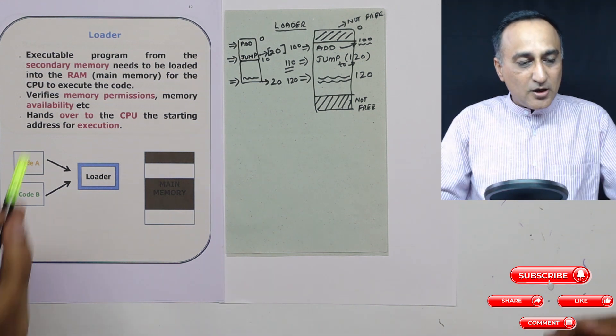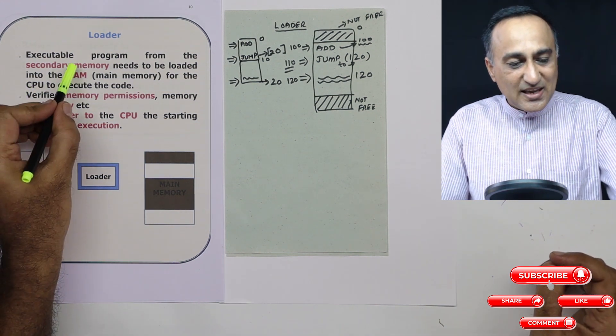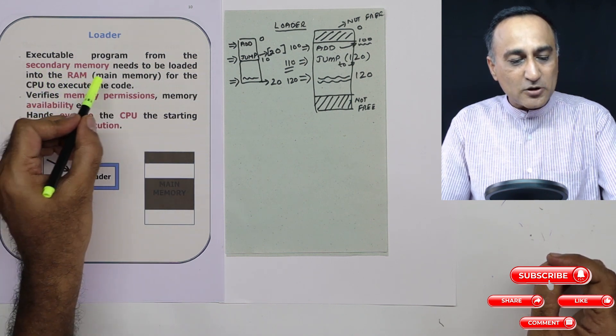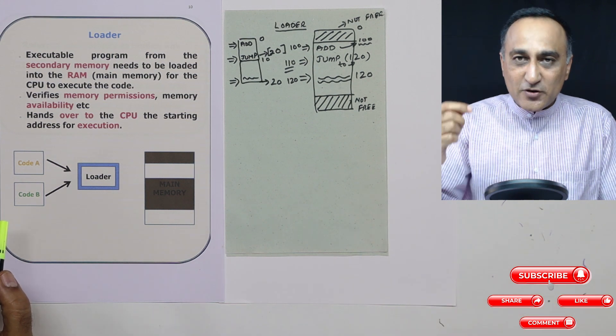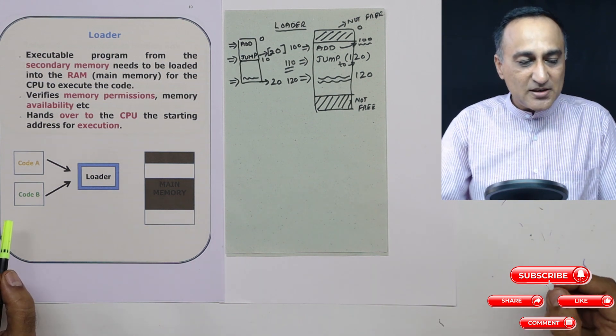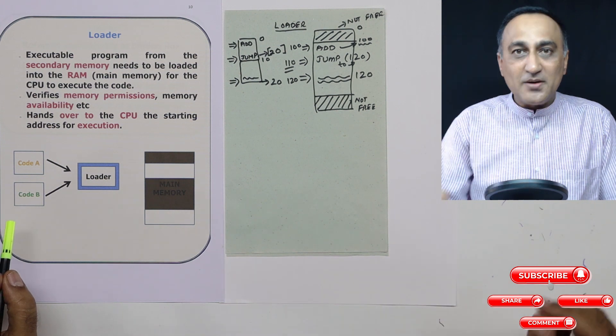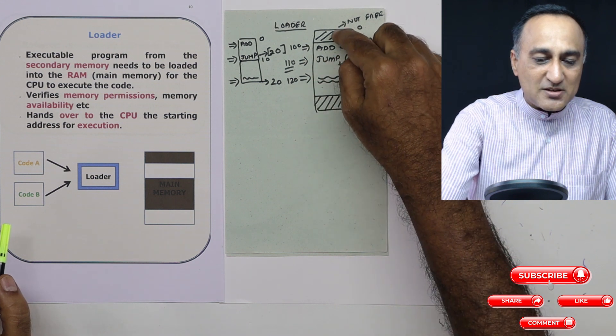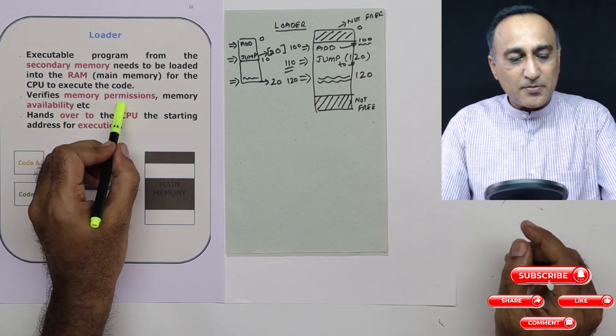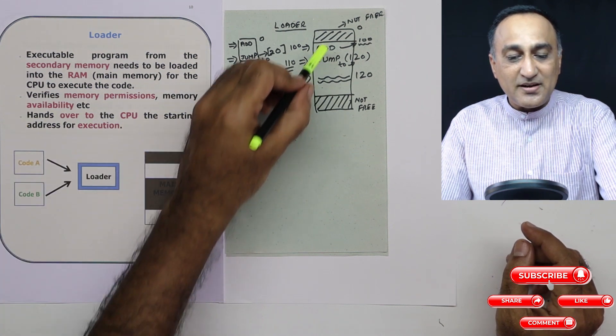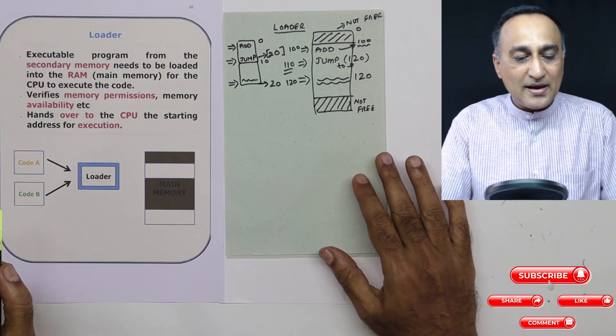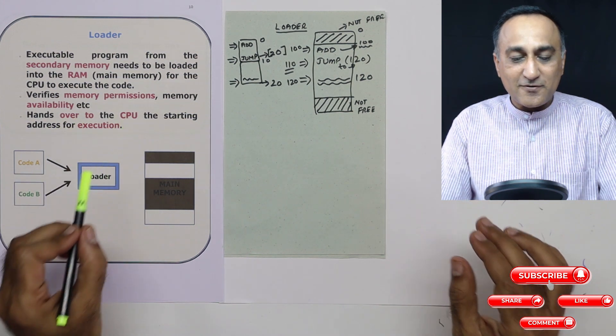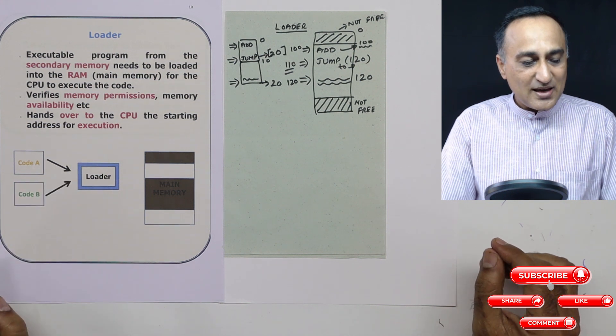So what is a loader? A loader is a software which takes an executable program from the hard disk or the secondary memory and puts it into the RAM or the main memory and transfers control to the CPU so that the code can be executed by the CPU. It does a few other important things. Suppose you try to take your code which tries to load into this area, it will check whether you have the permissions of memory for that, whether the memory is available. It didn't try to load it here because memory was not available. And after it does the loading, it hands over the instructions or the control of the first address or the starting address to the CPU for execution.